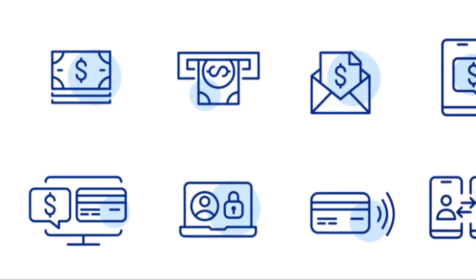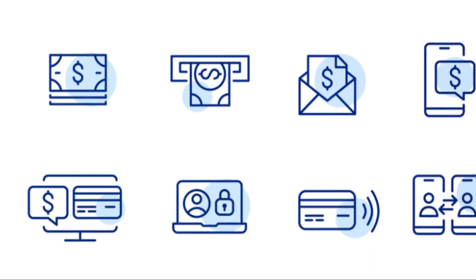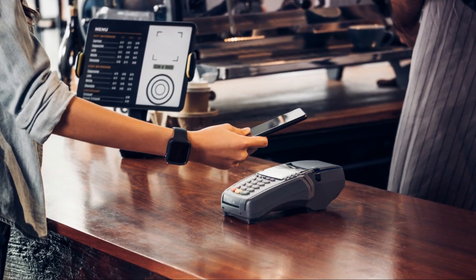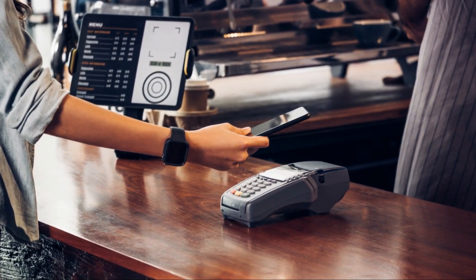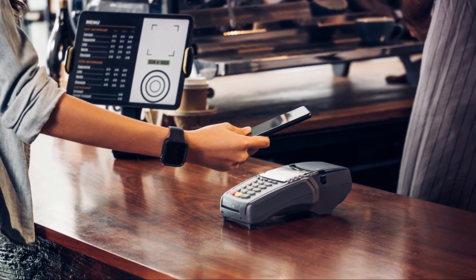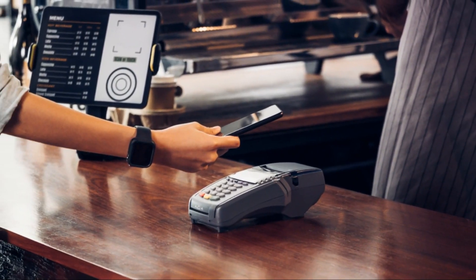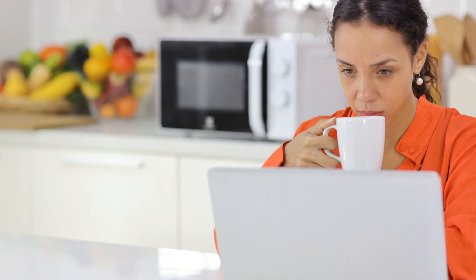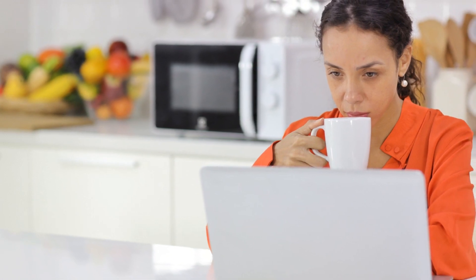This entire process, from swipe to authentication, occurs in a matter of seconds, making it possible for you to purchase your morning coffee or fill up your gas tank with a simple swipe of your card. The reader is like a translator decoding the language of the magnetic stripe — a complex process that happens in the blink of an eye, making our daily transactions smooth and hassle-free.